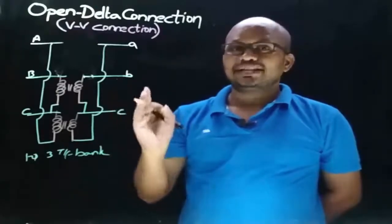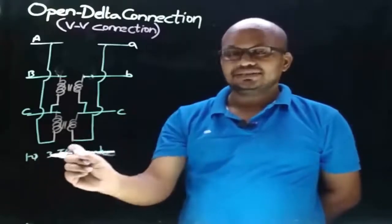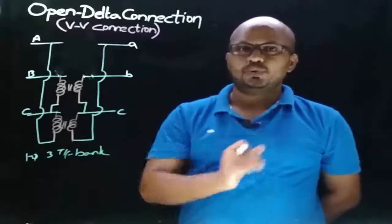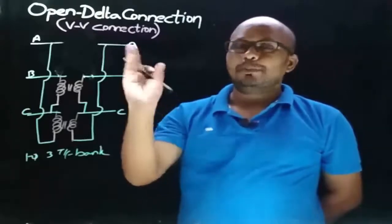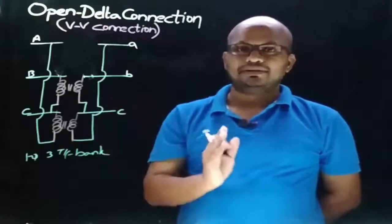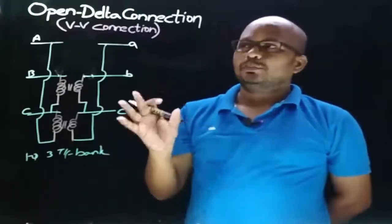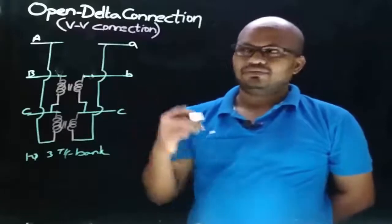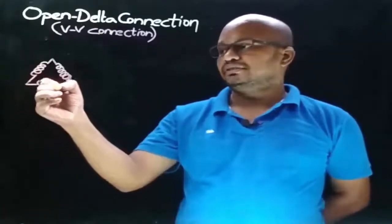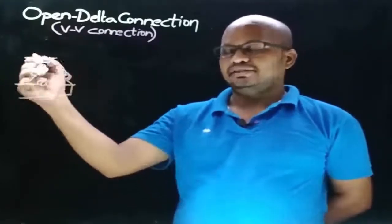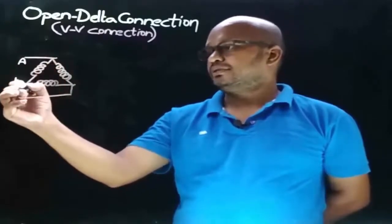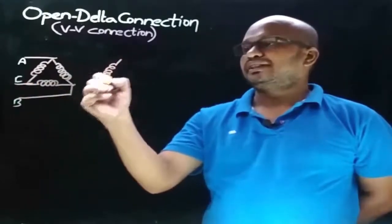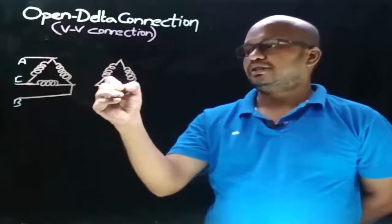This resultant winding connection is called open delta connection. Keep this point in mind: when one of the transformers in a delta-delta connected single-phase three-transformer bank gets failed, we generally think there will be a power interruption to the load. But with open delta connection, we can maintain the continuity of supply to the load, but with reduced capacity. Let's redraw the delta-delta connection in a simple manner and observe the open delta connection.